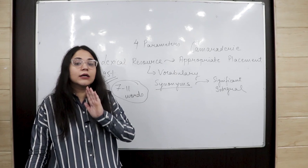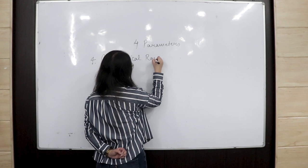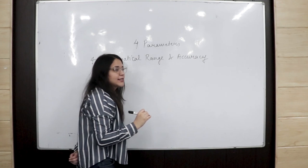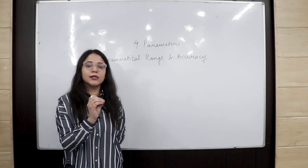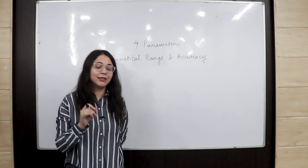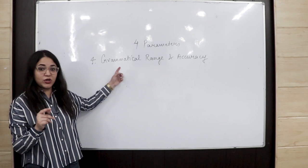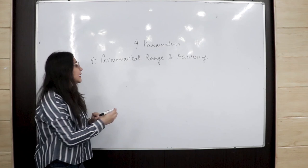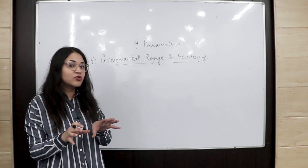The fourth parameter is Grammatical Range and Accuracy. Grammatical range and accuracy is mostly based on grammar — tenses, prepositions, articles, punctuation, and so on. This is very important and mostly students don't know about it, especially those striving for 7, 7.5, or 8 bands. Grammatical range has a different meaning from grammatical accuracy. Students often fail to score in grammatical range specifically. Grammatical range is basically your variety of sentence types.